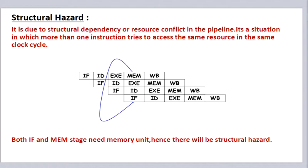The first hazard is structural hazard. It is due to structural dependency or resource conflict in the pipeline — a situation in which more than one instruction tries to access the same resource in the same clock cycle. In this time diagram we can see there is resource conflict between the instruction fetch stage of the fourth instruction and the memory access stage of the first instruction, because both stages need access to memory.